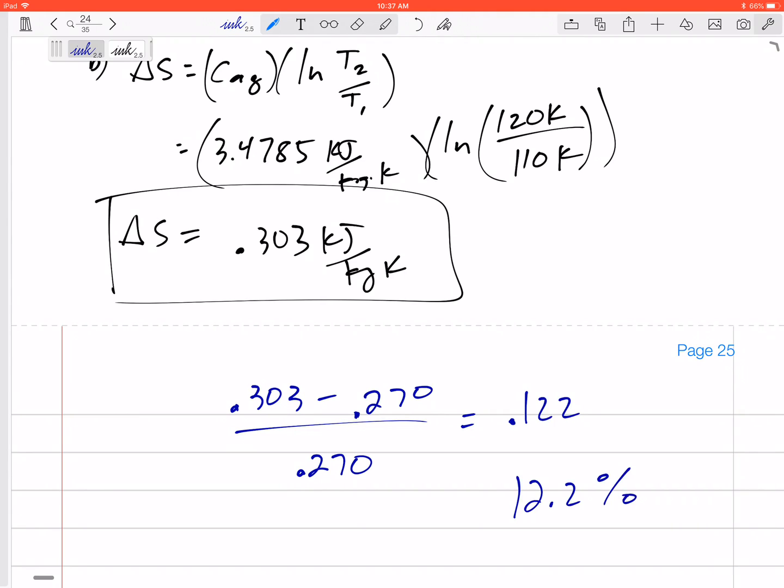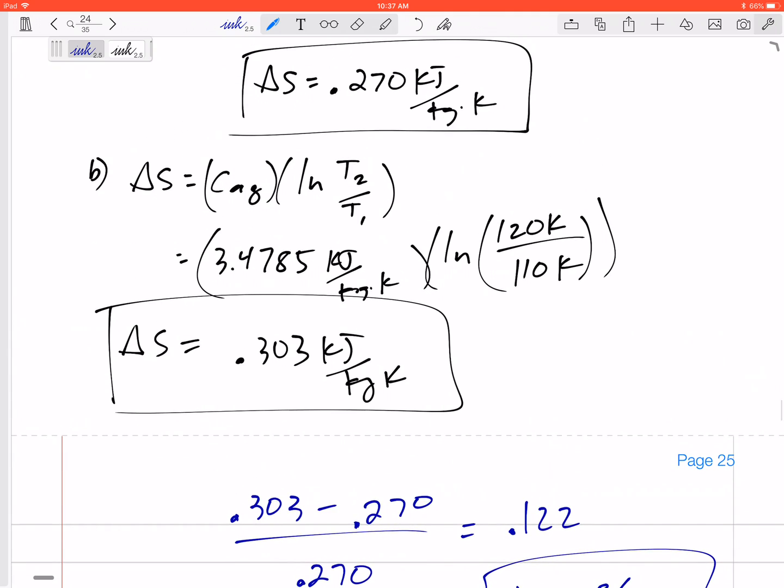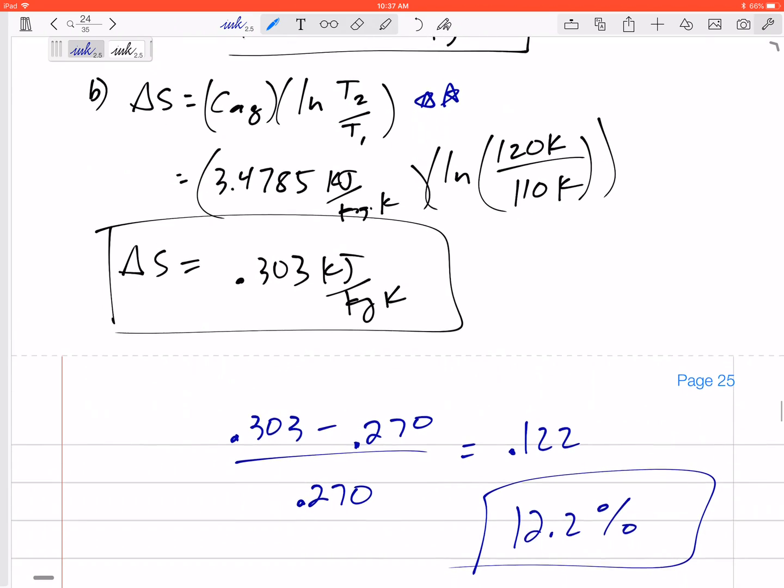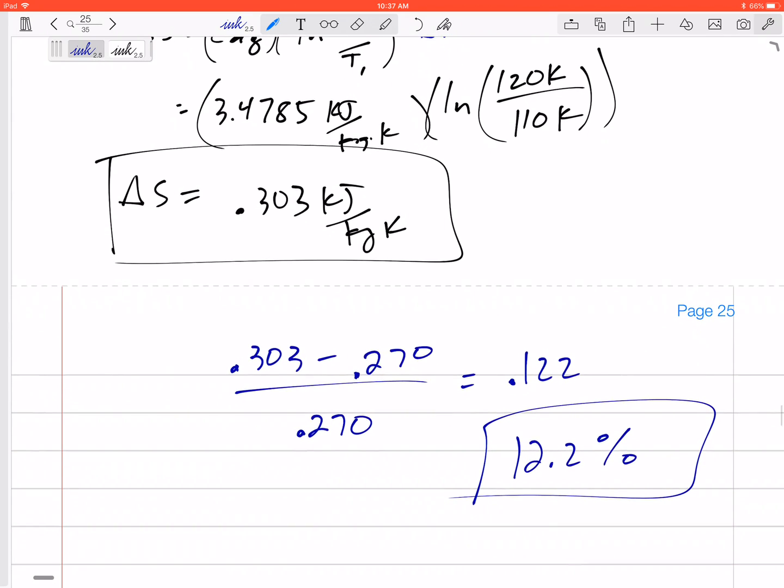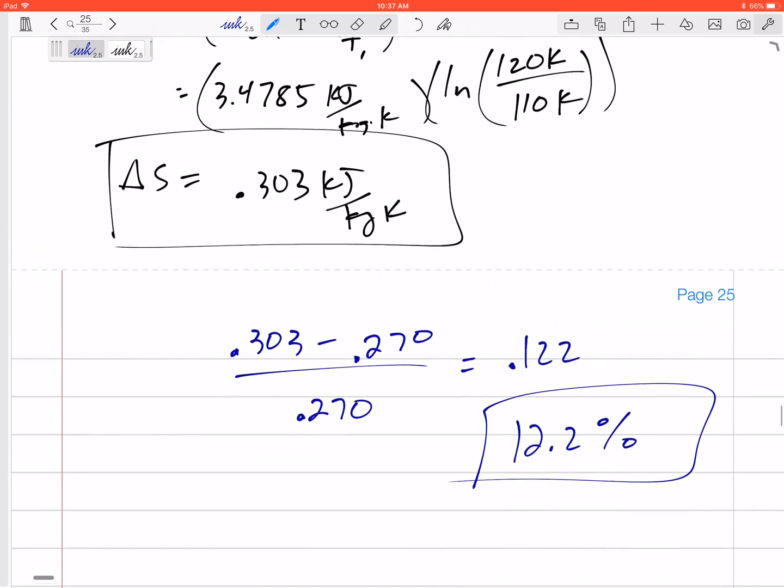That can get significant, right? But if we don't have property tables, sometimes we don't have a choice. We need to use delta S is C LN T2 over T1.